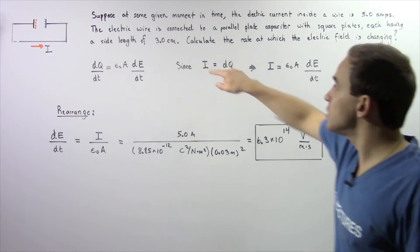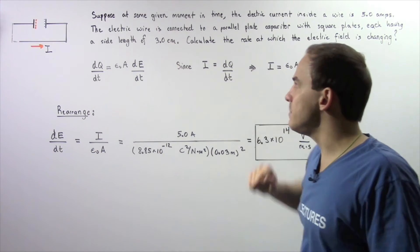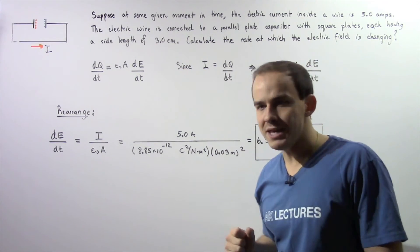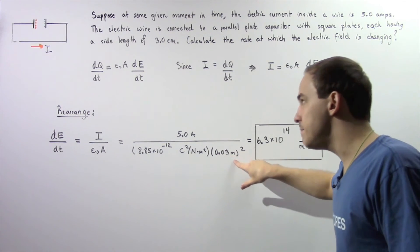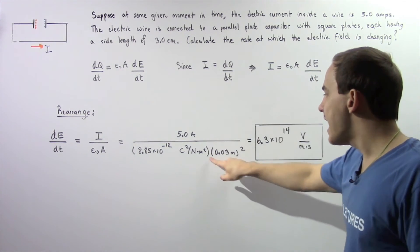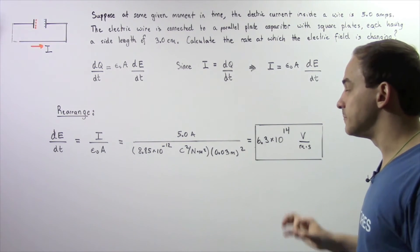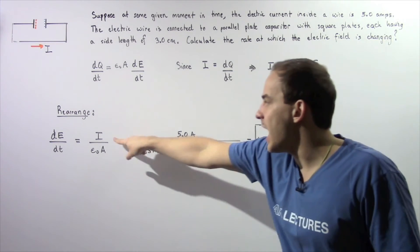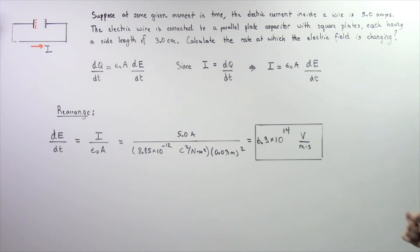Because we're dealing with centimeters, we have to divide by 100 to convert to meters. So we get 0.03 meters, we square that and that gives us the area. At this particular moment in time, the I is equal to 5 amps.